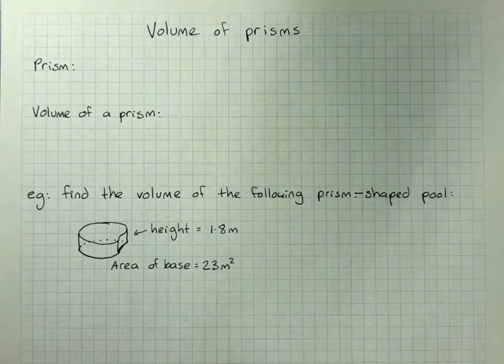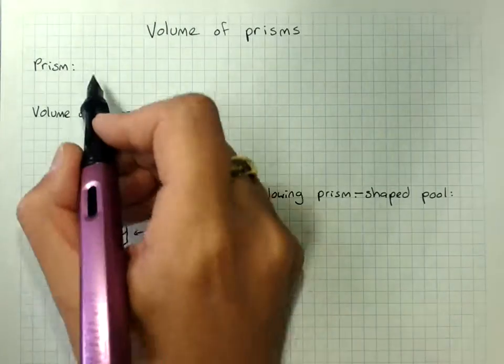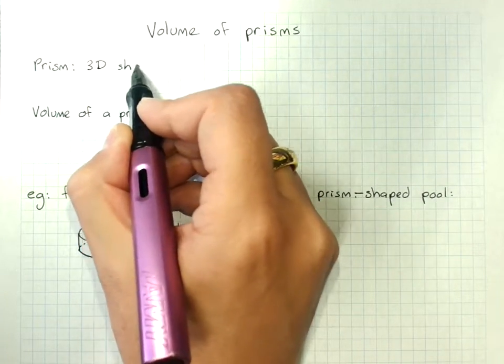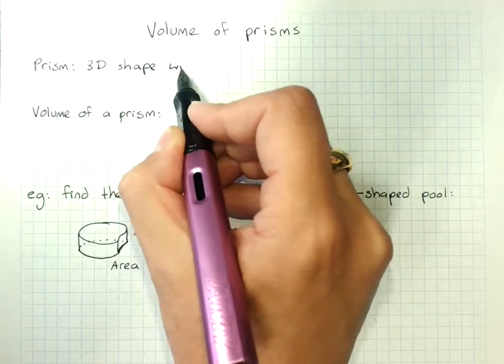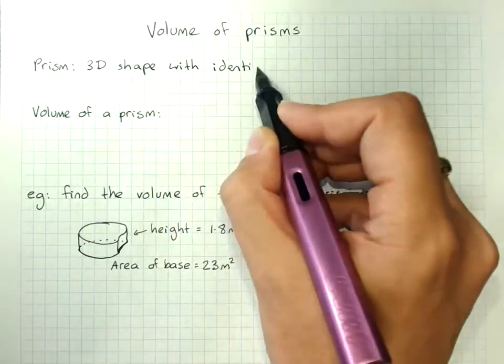Volume of prisms. A prism is a particular type of shape that has identical ends, so it's a 3D shape with identical end faces.